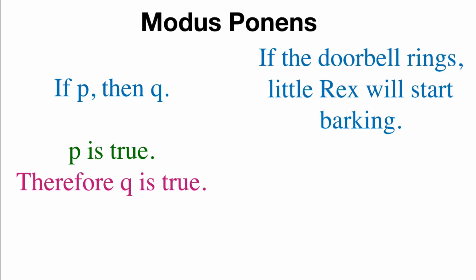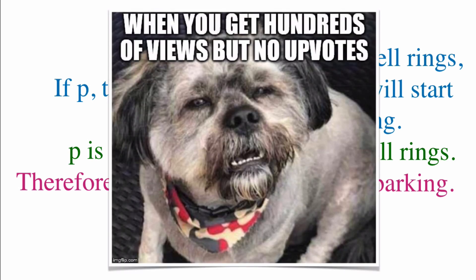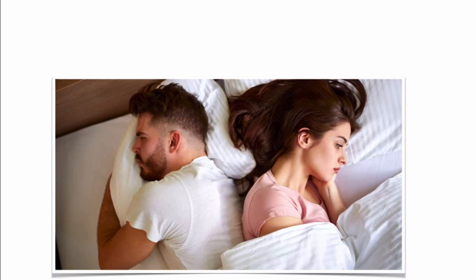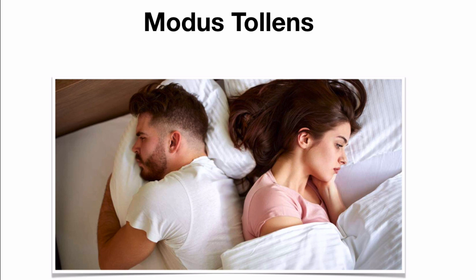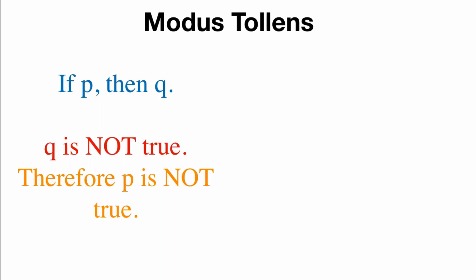Here's an example. If the doorbell rings, little Rex will start barking. The doorbell rings, Rex starts barking. That should make perfect sense. So what is the opposite of modus ponens? The opposite is called modus tollens, and it's literally from the Latin, the mood that denies.